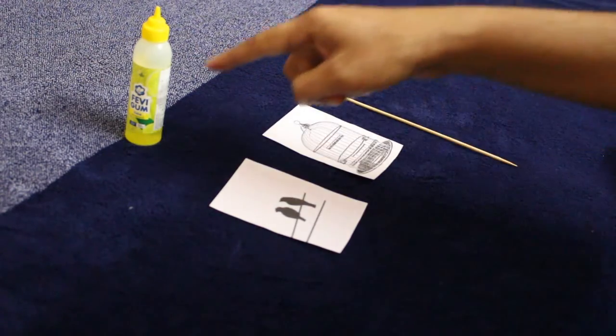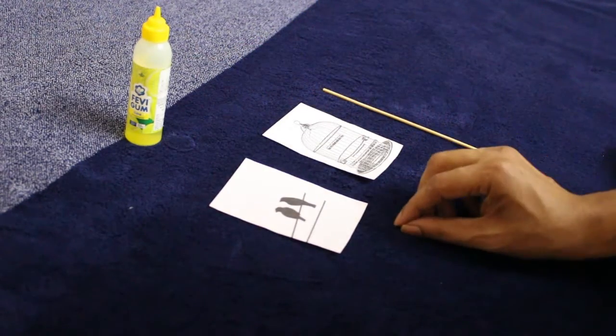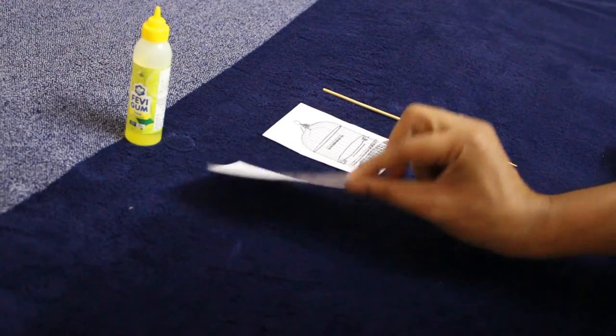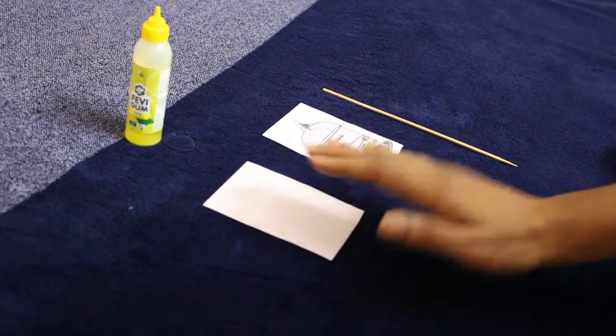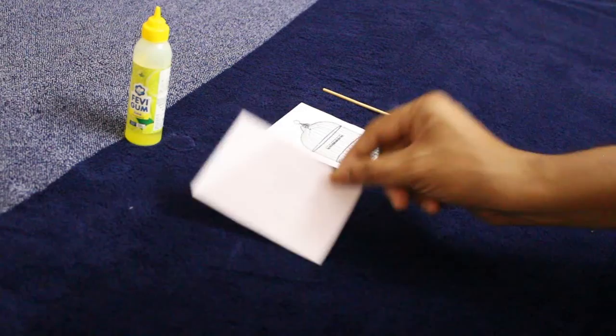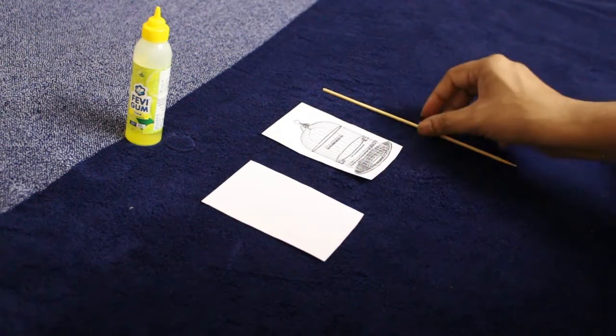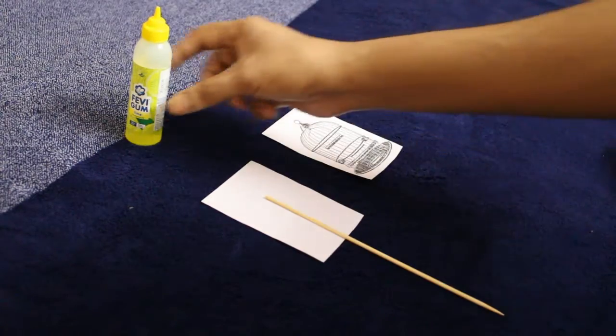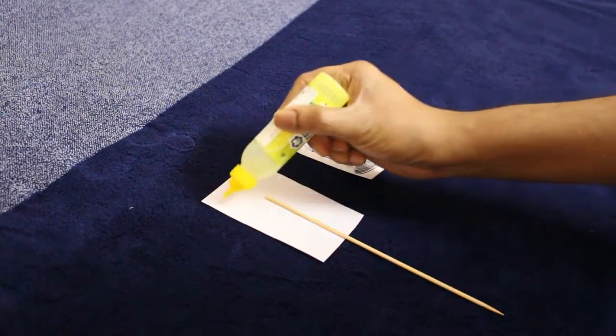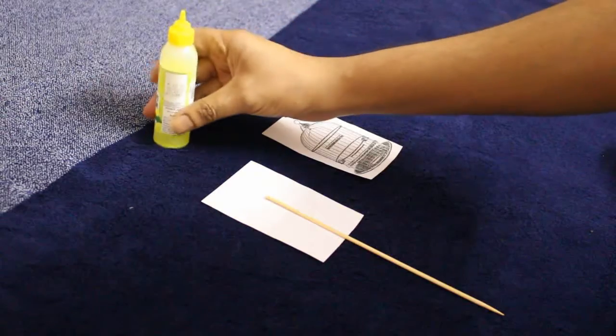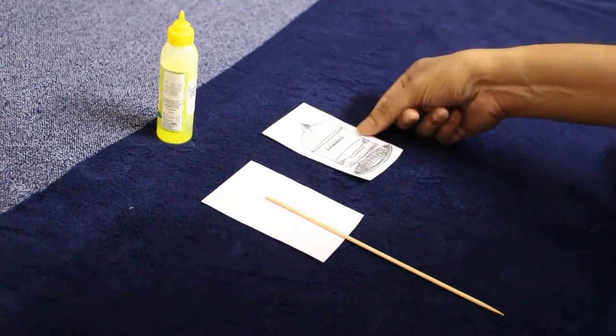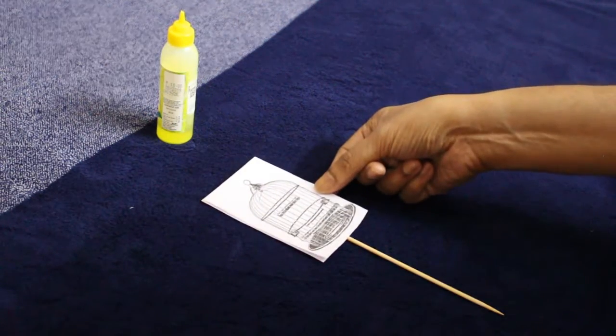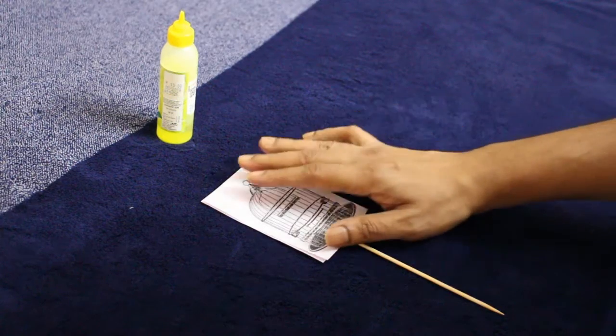So how to do it: keep one drawing like this, the picture should face the bottom side. Then keep the stick like this and then apply glue and keep the other piece like this and stick it.